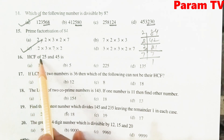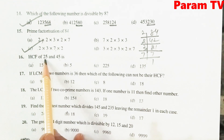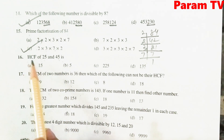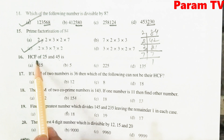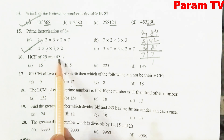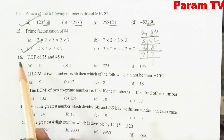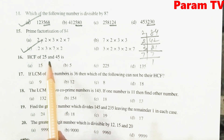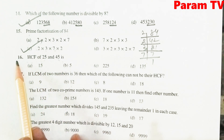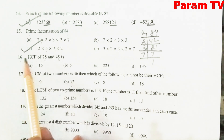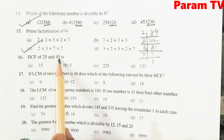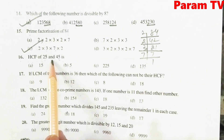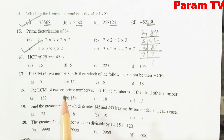HCF of 25 and 45: HCF निकाल लीजिए 25 and 45 का. मैंने बहुत अच्छी तरह से explain किया है — वो videos देखिए और check कीजिए. The answer is 5.